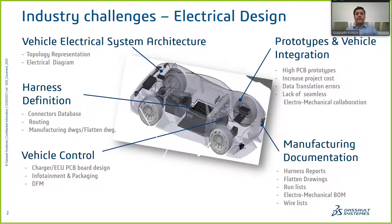When we talk about the electrical vehicle, there are various industry design challenges we need to take care of. For example, vehicle electrical system architecture, like topology representation, the electrical design representation — the harness definition as a sub-assembly connecting different systems and subsystems on the vehicle. It can be the connector database, harness definitions, routing, manufacturing drawings and flattening drawings. Similarly, the vehicle control, charger or engine control units, the PCBs, instrument cluster PCBs, harnesses running between the PCBs, and the challenges associated with design, manufacturability and so on.